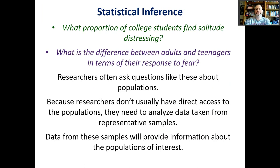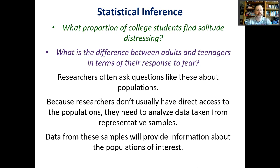What proportion of college students find solitude distressing? What is the difference between adults and teenagers in terms of their response to fear? Researchers often ask questions like these about populations. Because researchers don't usually have direct access to the populations, they need to analyze data taken from representative samples. Data from these samples will provide information about the populations of interest. These are the questions we're going to look at in the first two examples in the slideshow — both experimental psychology examples of the types of things that researchers investigate in the real world.